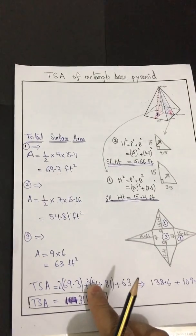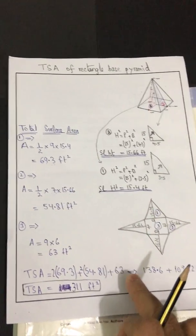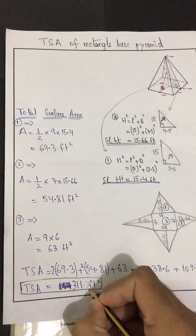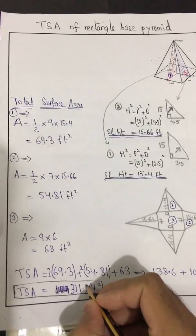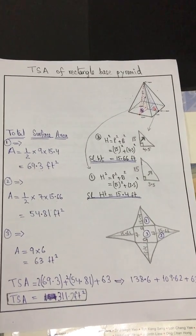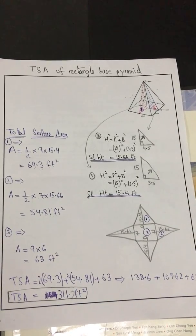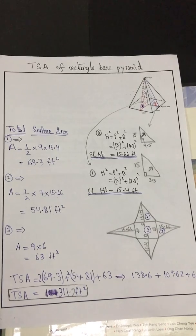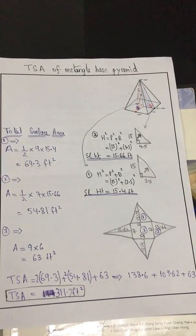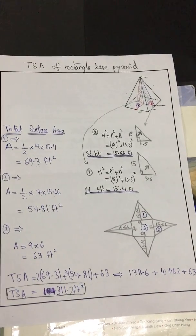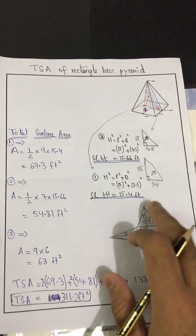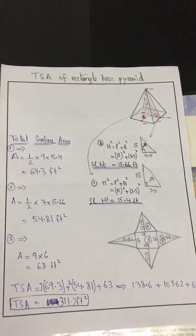Total surface area = (2 × 69.3) + (2 × 54.81) + 63 = 311.2 square feet. Since all units are in feet, the area is in square feet. To summarize: to find total surface area we need slant heights; if not given, calculate using Pythagoras theorem. For a rectangular pyramid, draw two right-angled triangles inside, find both slant heights, draw and label the net diagram, find each area, and add them to get the total surface area.